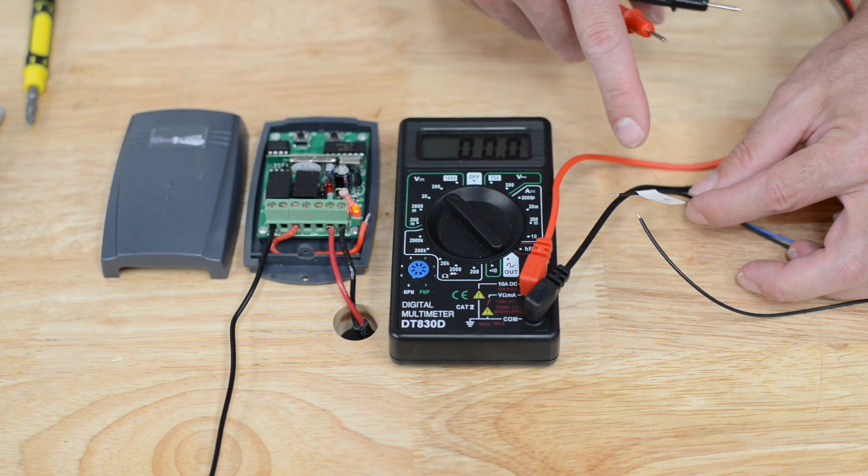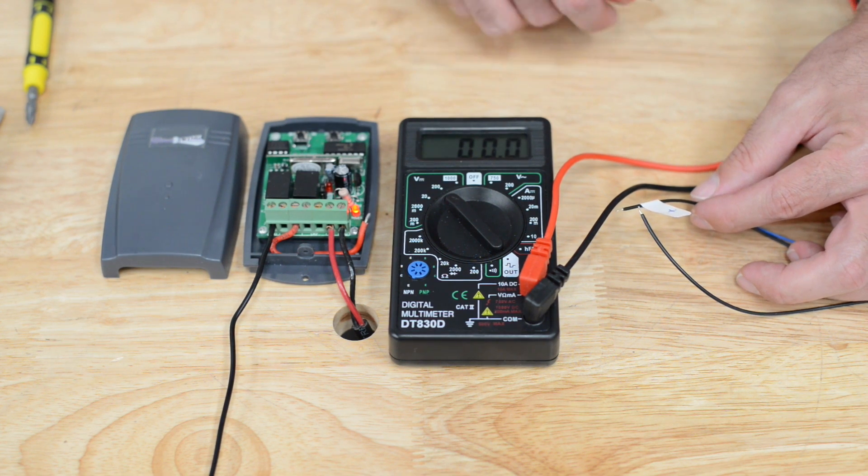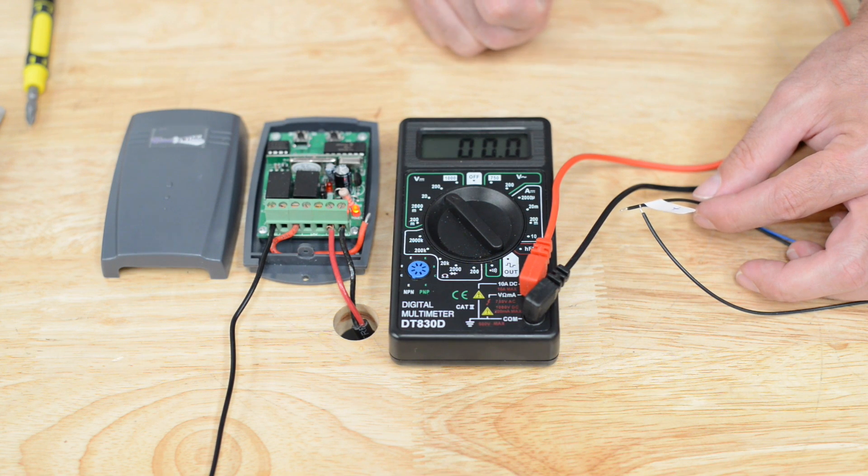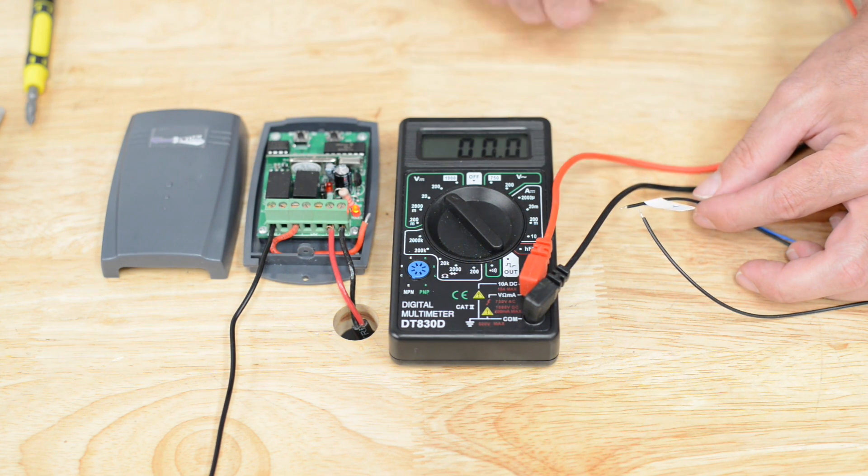In the future, if you lose which wire is positive and negative, there are two solutions you can do. One is you have a 50-50 chance of getting it right in the keypad. It won't hurt anything to put the positive into the ground on the keypad and the negative into the OP on the keypad. It just won't transmit a signal.